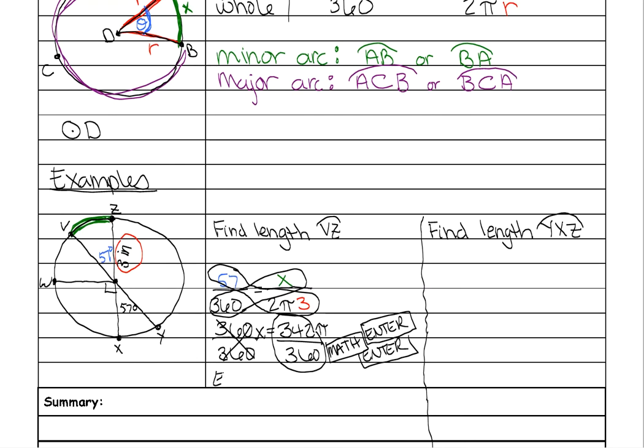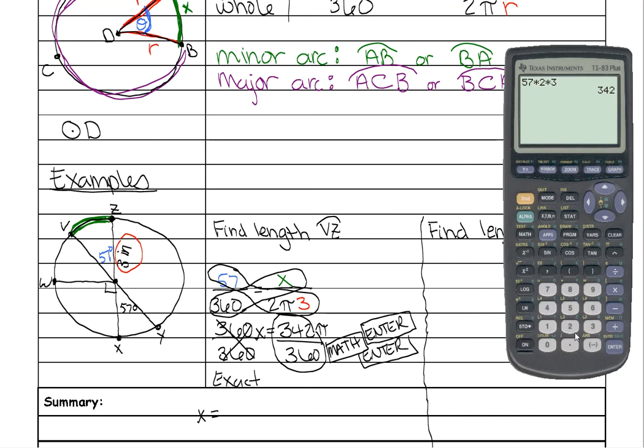There is an exact answer, which is where you do math, enter, enter. So our exact answer would be like this. It would be 342 divided by 360. And it gives you this decimal. But if you press math, enter, enter,